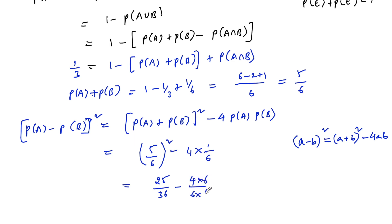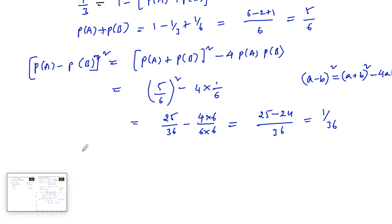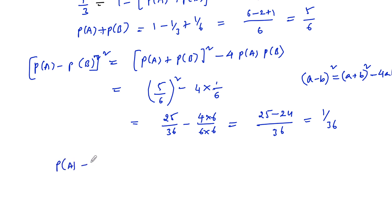That gives 25/36 − 24/36 = 1/36. So [P(A) − P(B)]² = 1/36, which means P(A) − P(B) = √(1/36) = 1/6. Let us label this as equation 3.